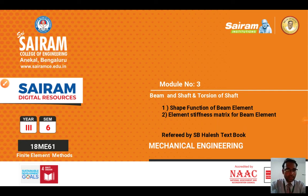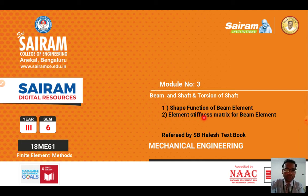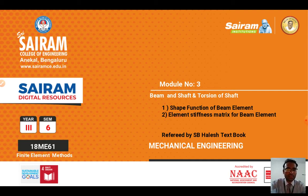In this lecture, I am going to cover two derivations: the shape function of a beam element, and the element stiffness matrix for a beam element. The second derivation is very important for examination purposes. Just as we derived the element stiffness matrix for a 1D bar element and truss element, we similarly need to derive it for the beam element.